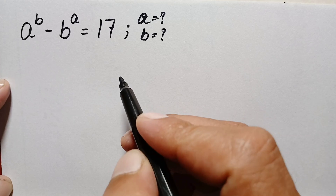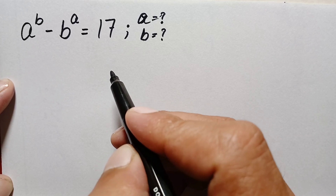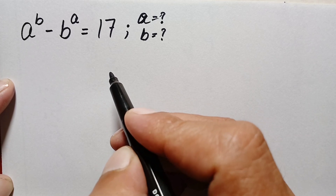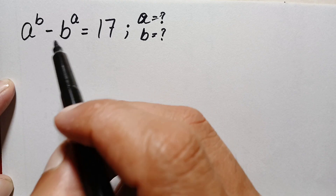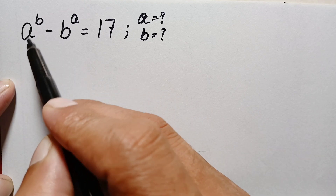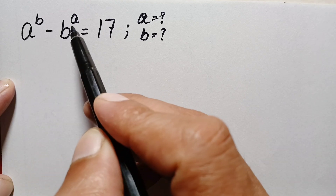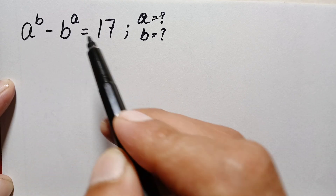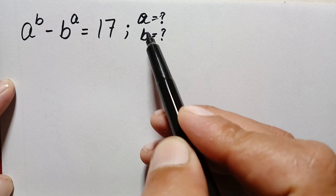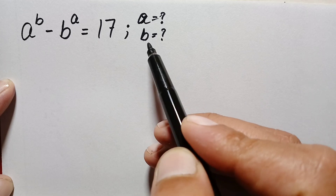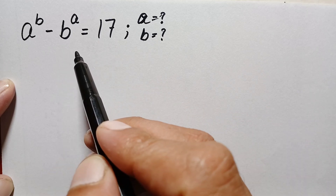Hello everyone, welcome. Today we have a very interesting math problem, which is a raised to power b minus b raised to power a is equal to 17. We will try to find out the values of a and b in this beautiful math problem.